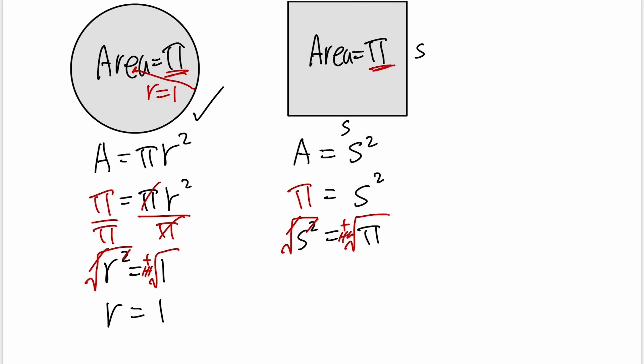So as long as we have the side for the square being square root of π, then yes, this is also possible.